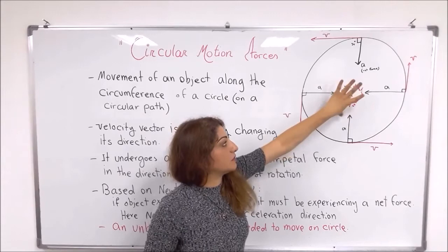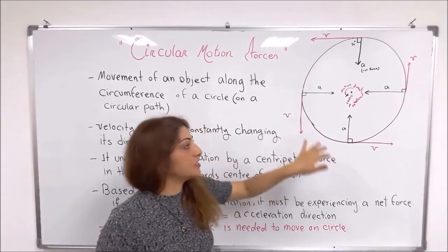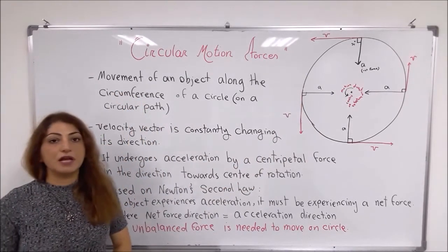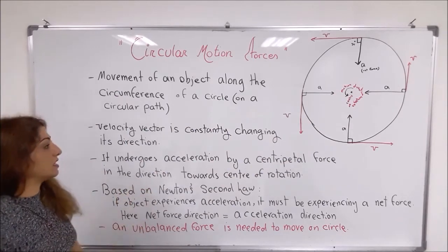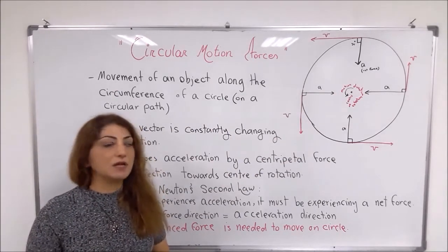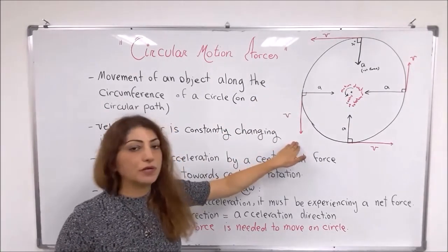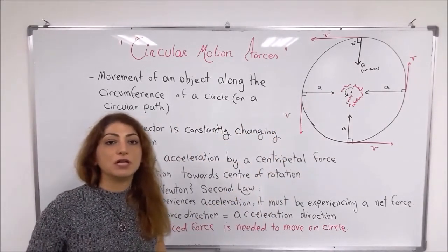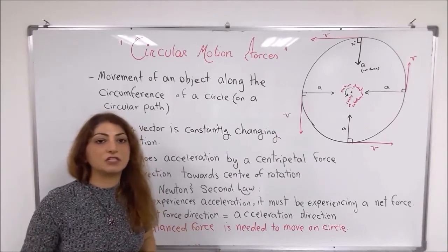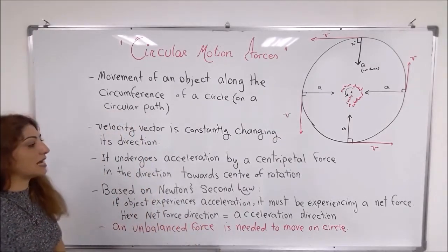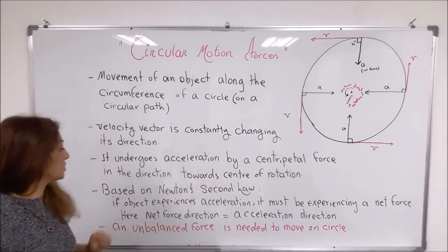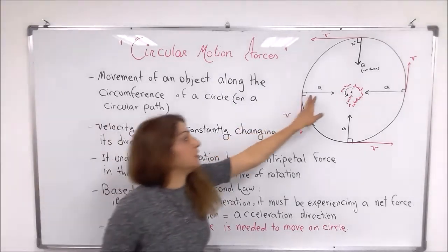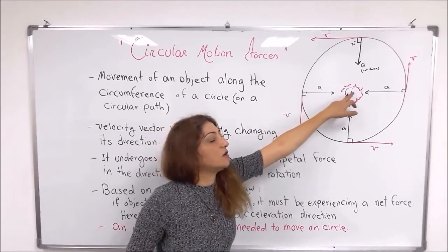In this diagram, the rotation is anti-clockwise. You can see that the velocity vector is always constantly changing its direction — here it is downward, here it is to the right, upwards, and to the left. So in circular motion, the velocity vector is constantly changing its direction. The object undergoes acceleration by a centripetal force in the direction towards the center of rotation, so the acceleration vector is directing towards the center of rotation.